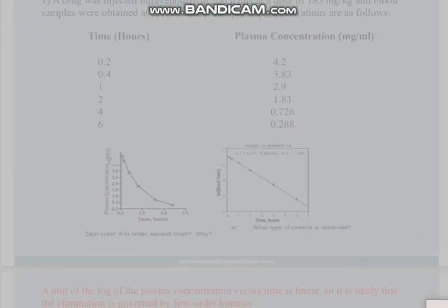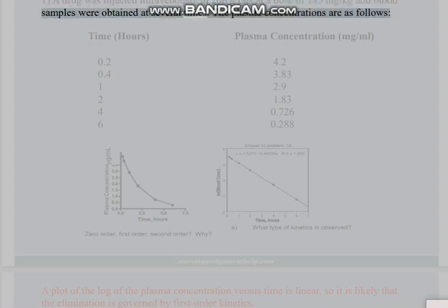Problem 1: A drug was injected intravenously in 200g rats at a dose of 185 mg/kg and blood samples were obtained at several times.